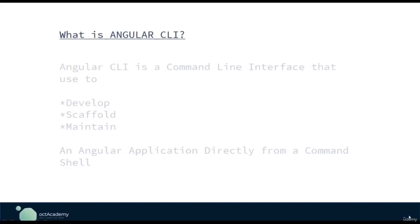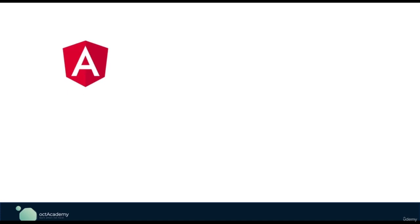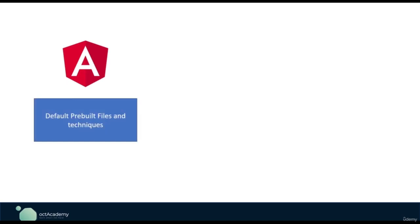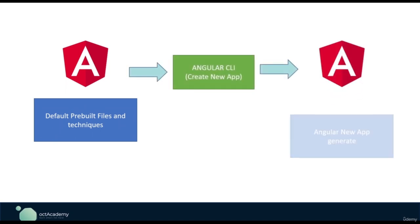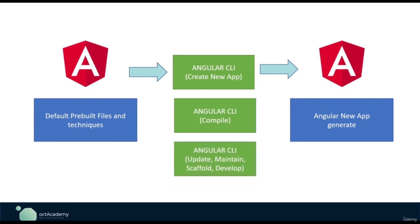The Angular CLI is a command line interface tool used to initialize, develop, scaffold, and maintain Angular applications directly from a command shell. Angular has default pre-built files, and the Angular CLI lets us create a new Angular app with a single line of command. We also need to compile Angular to JavaScript to build for production, and we can do that using the Angular CLI. We can also update, maintain, scaffold, and develop an Angular app using it.